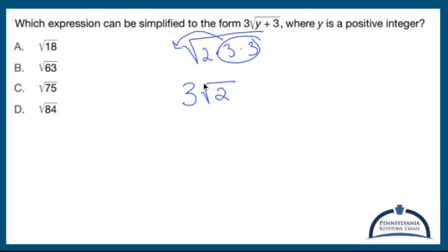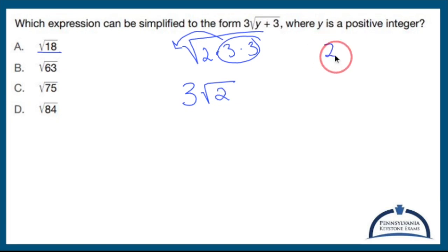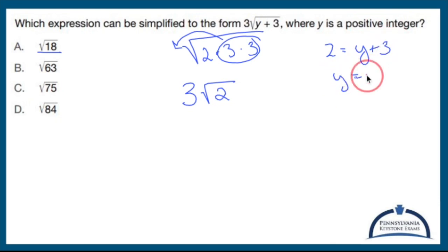Now here's where we have to be careful. 3 times the square root of 2 is my answer normally for a problem like A. However, that's not what they want. They want me to make this look like 3 times the square root of y plus 3, where y has to be a positive integer. If inside the square root I'm going to have y plus 3, and if 2 is the same as y plus 3, then subtracting 3 gives y equals negative 1. That's not a positive integer, so A is not my option.